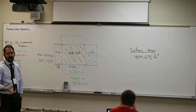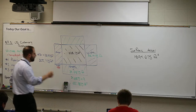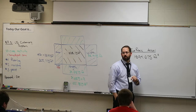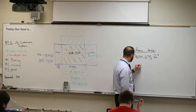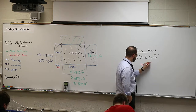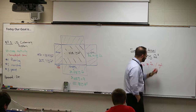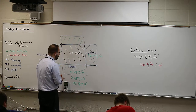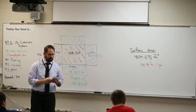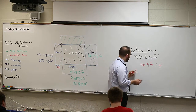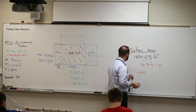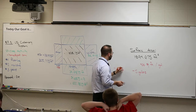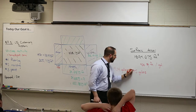Now, how much will one can of paint cover? Each gallon will cover 400 square feet. So we need to figure out how many gallons to buy. We divide the total surface area by 400. 1,894.675 divided by 400 gives us 4.74 gallons, so we need to buy 5 gallons.